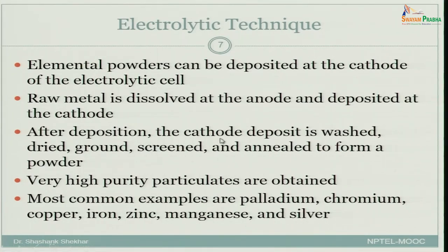After deposition, the cathode deposit is washed, dried, ground, screened, and annealed to form the powder. As you will see, it will be in a porous, spongy form — like powder clustered and agglomerated together.